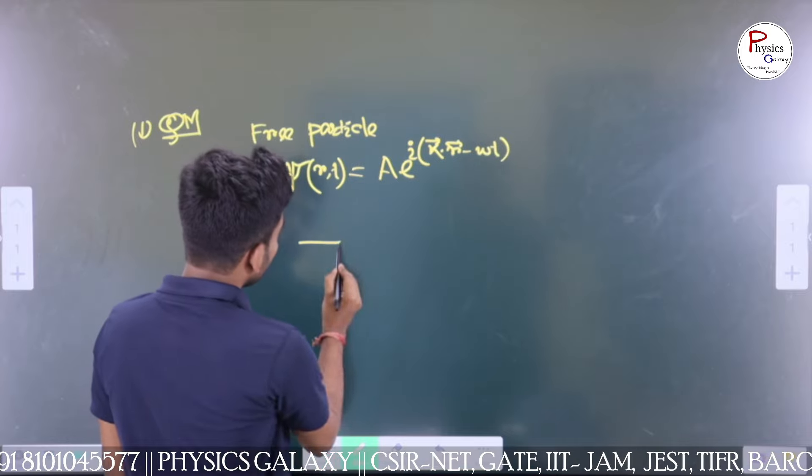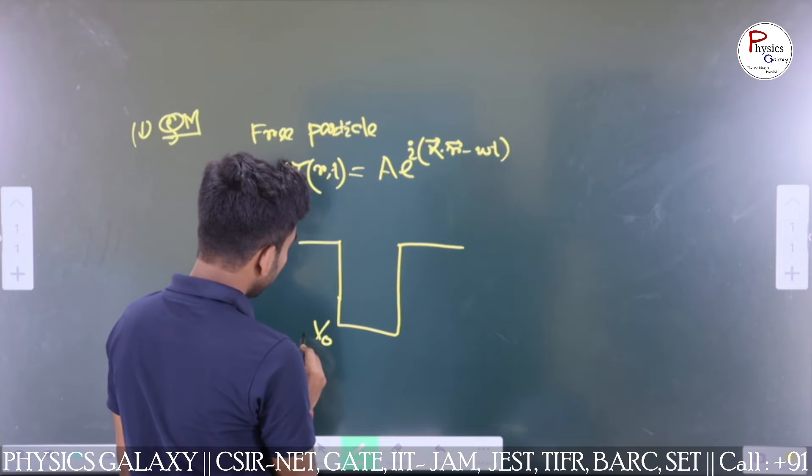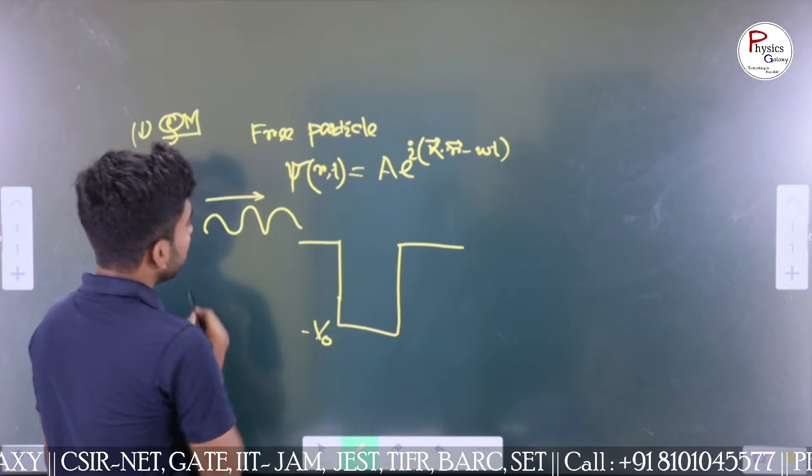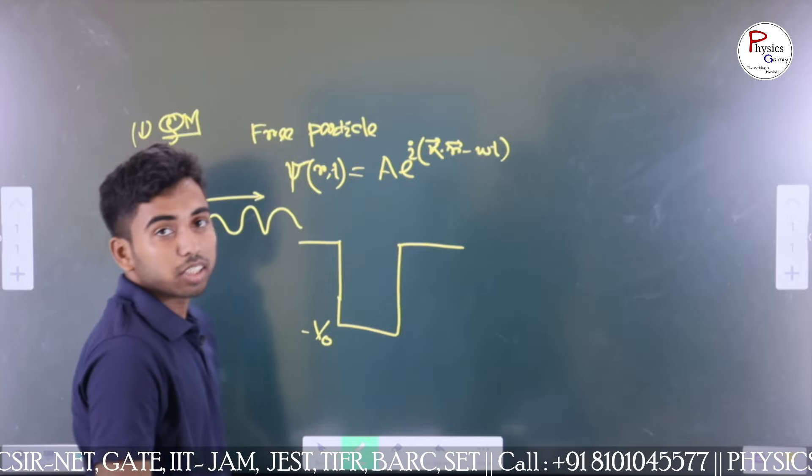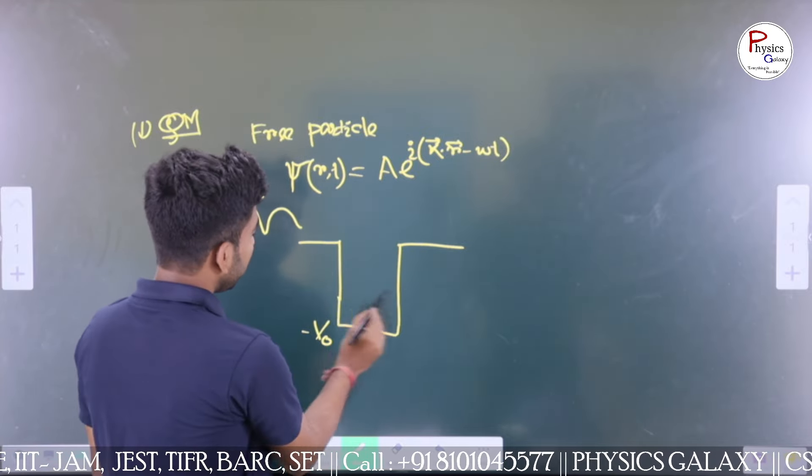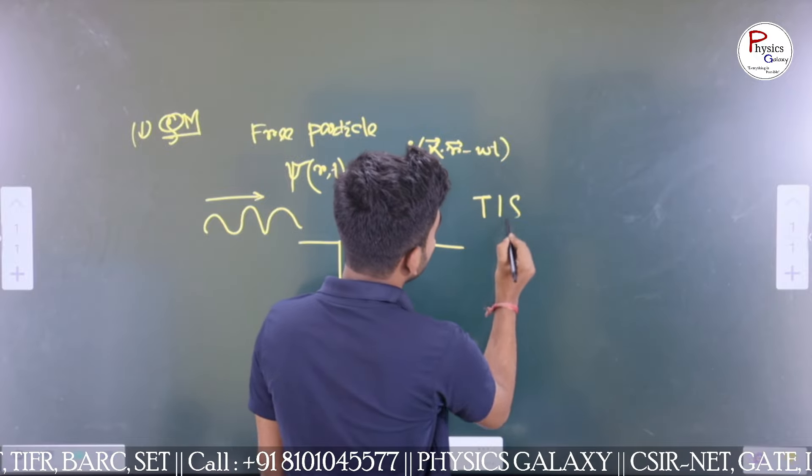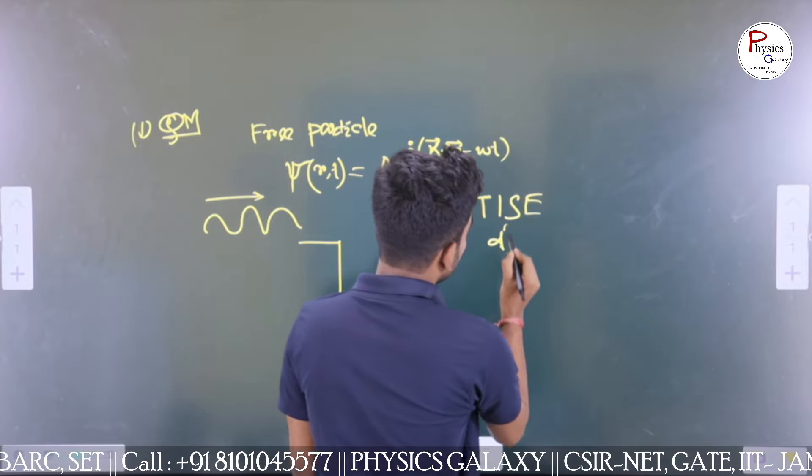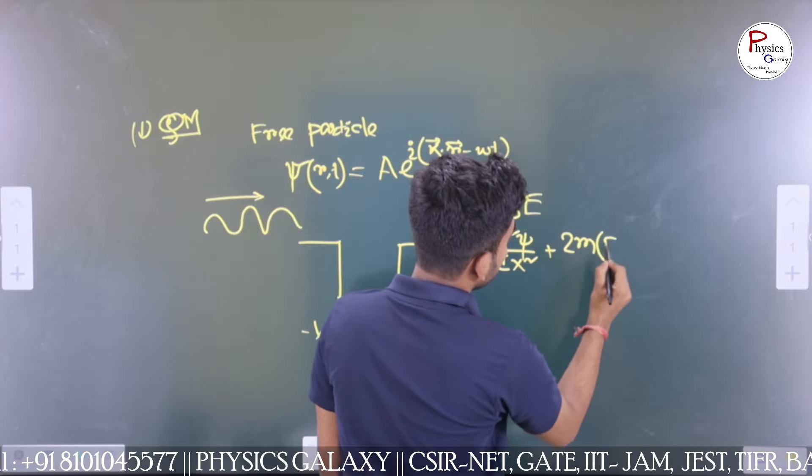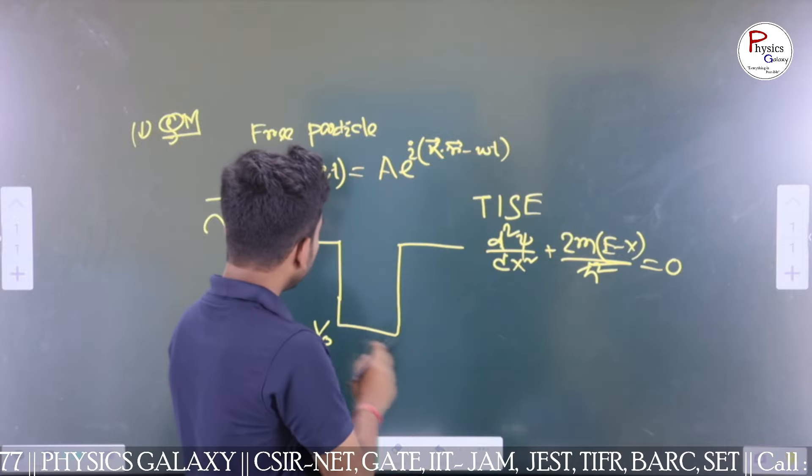After this, they gave me a potential with depth V₀, and a quantum particle incident from left to right. They asked me to describe the form of wave function in these three regions. Here we can apply the Schrödinger equation, the time-independent equation. We apply this in these three regions.